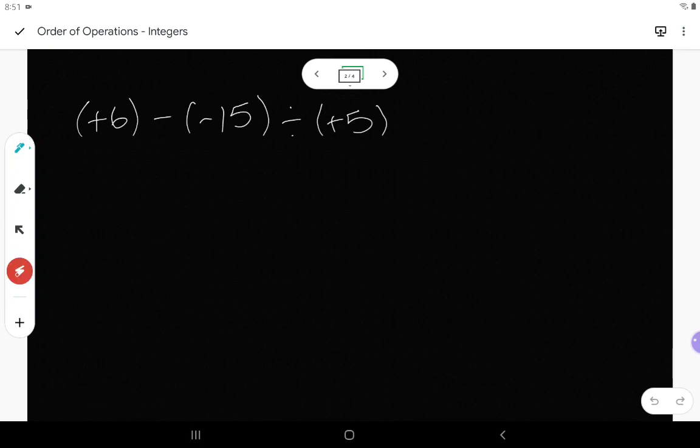So for this one, I've got positive 6 minus negative 15 divided by positive 5. Between my two operations, I've got subtraction and I've got division. I need to do the division first. So I'm going to underline that, or if you want, you can put a box around it to state that's what you're working on first. And then just draw an arrow to show me what that ends up equaling. With this division, I have an odd number of negative signs, only the one negative. So I know my answer is going to end up as negative. And 15 divided by 5 gives me a value of 3.